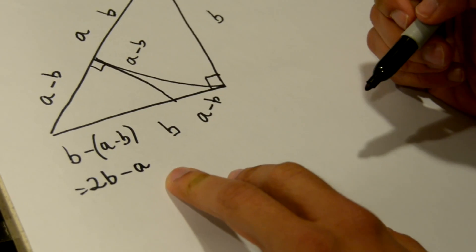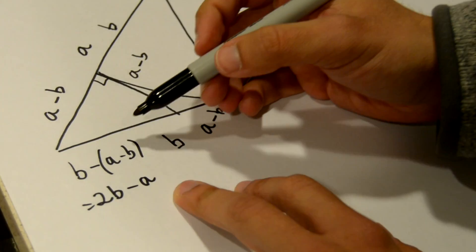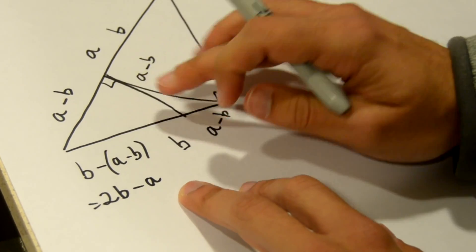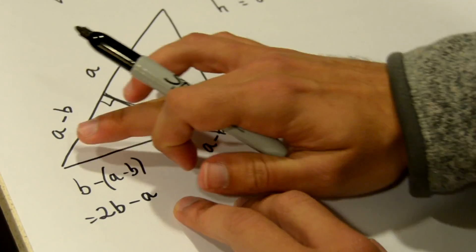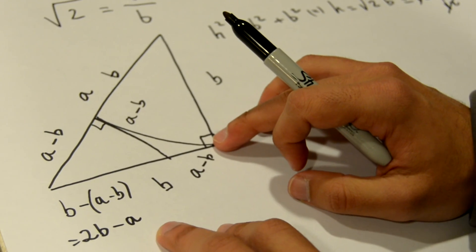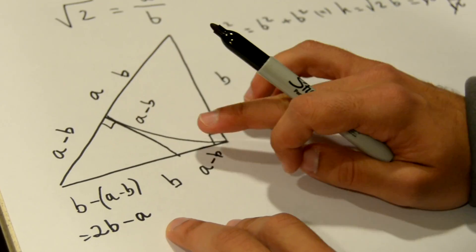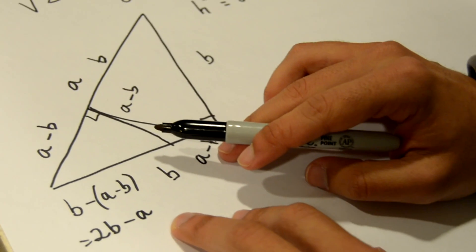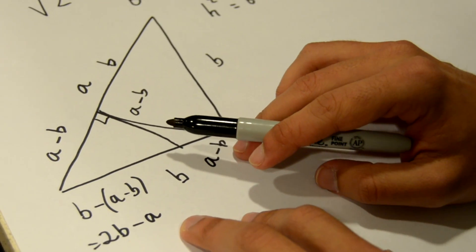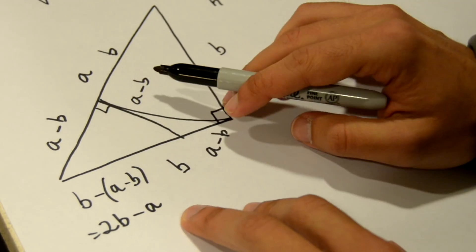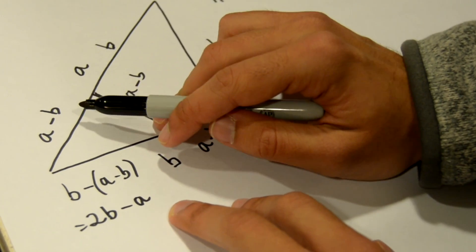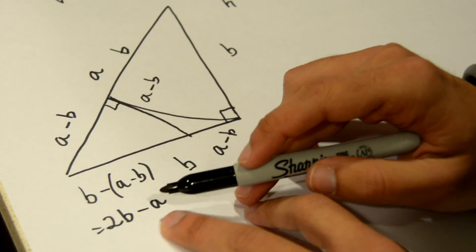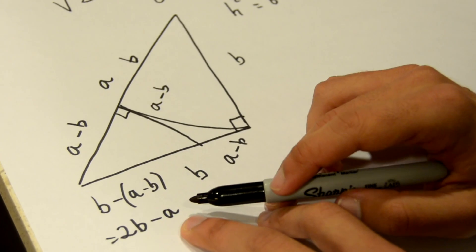So we're left with an isosceles right triangle that is smaller than the bigger one and has exactly the same properties. All the side lengths of this smaller triangle are also integers. If a and b are integers, then a minus b is an integer, and 2b minus a is also an integer.